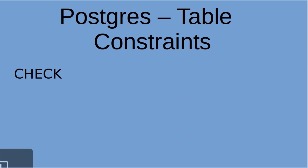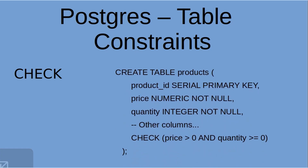Let's look at the last table-level constraint: CHECK. CHECK specifies a condition that must be satisfied for each row in the table. For this table, it's going to verify that the column 'price' is greater than zero and that 'quantity' is greater than or equal to zero. That's the entire function it's looking to achieve.